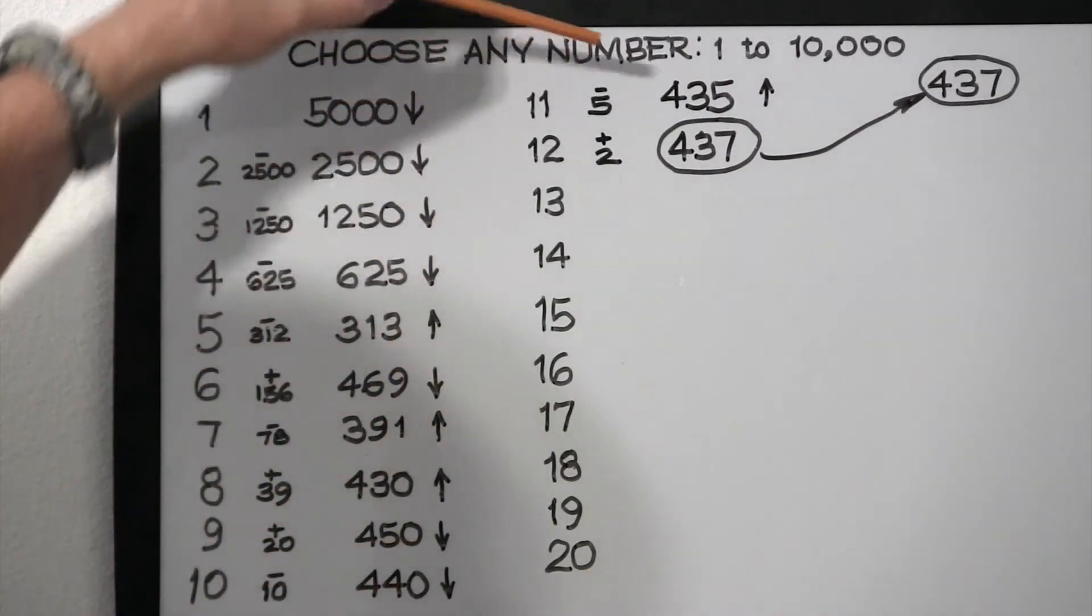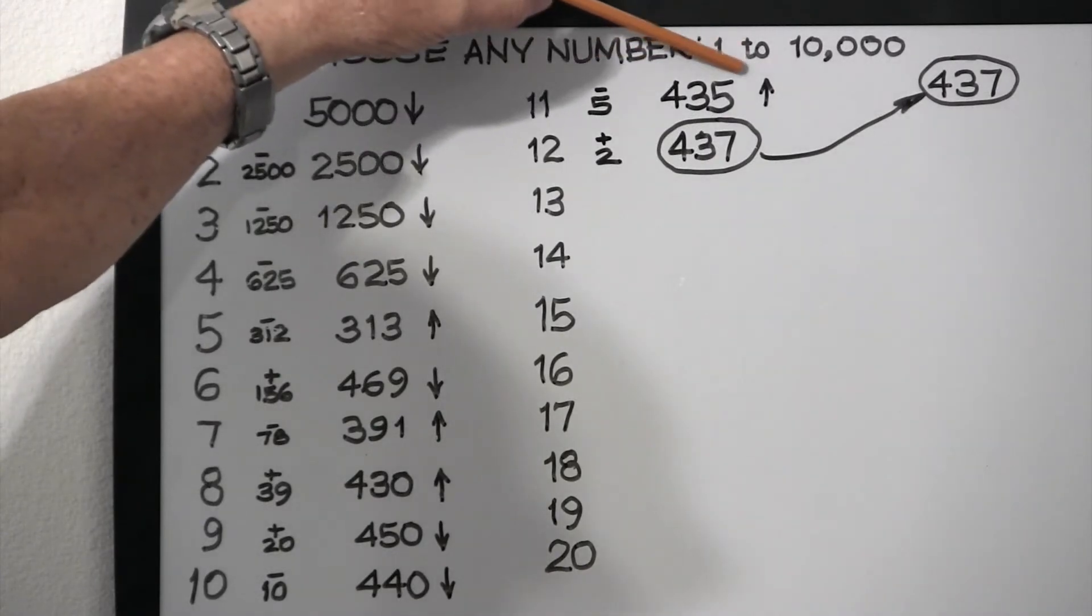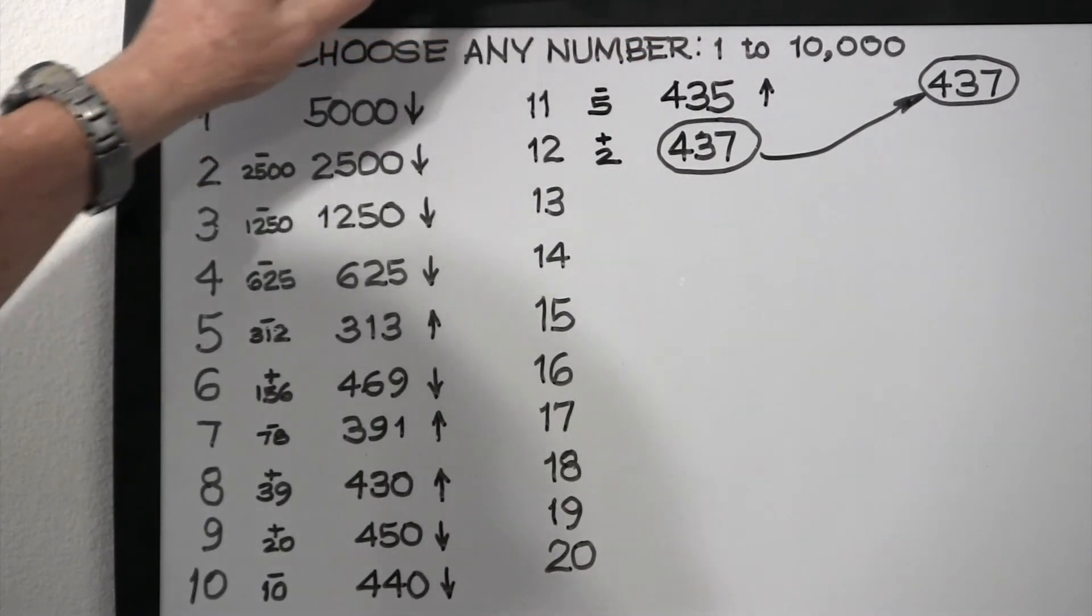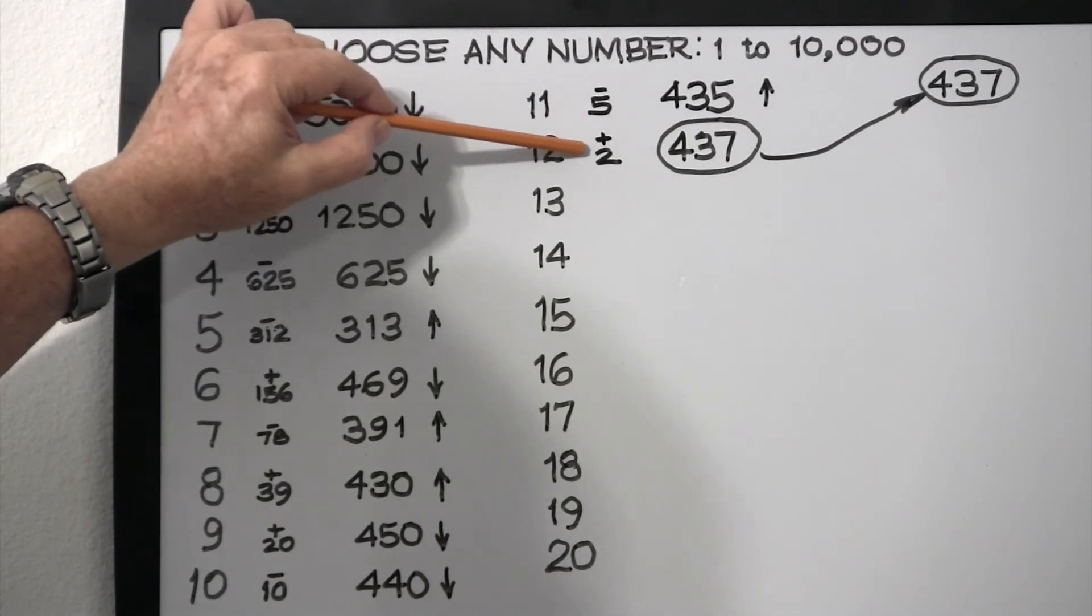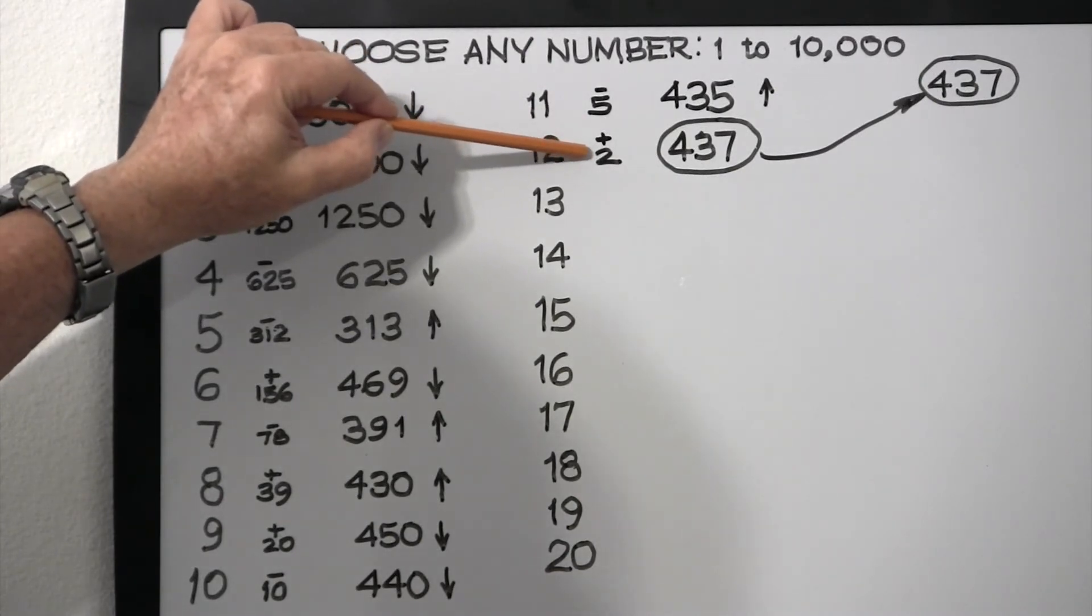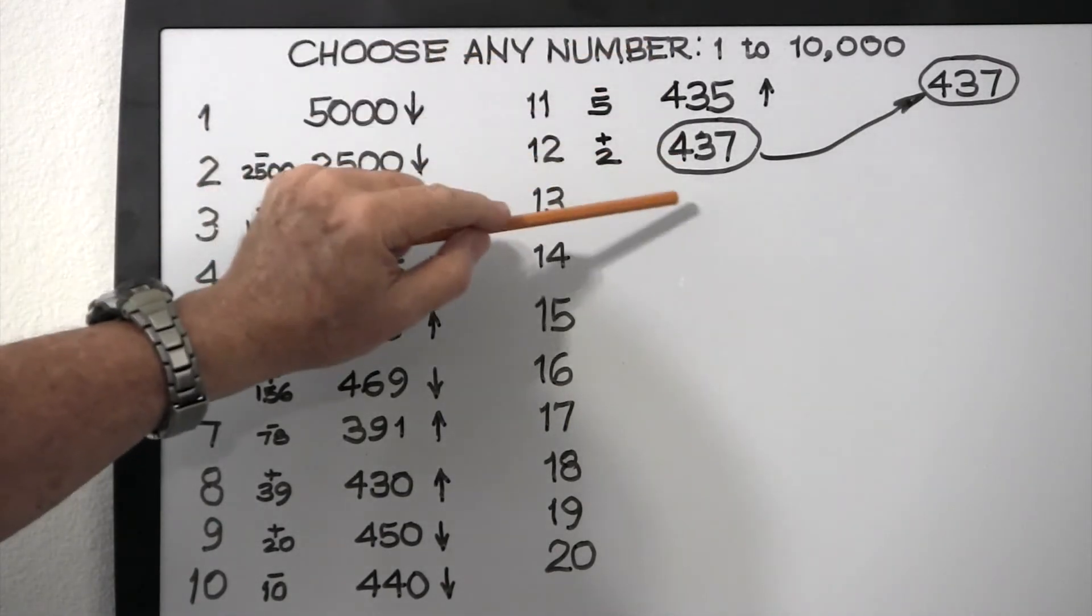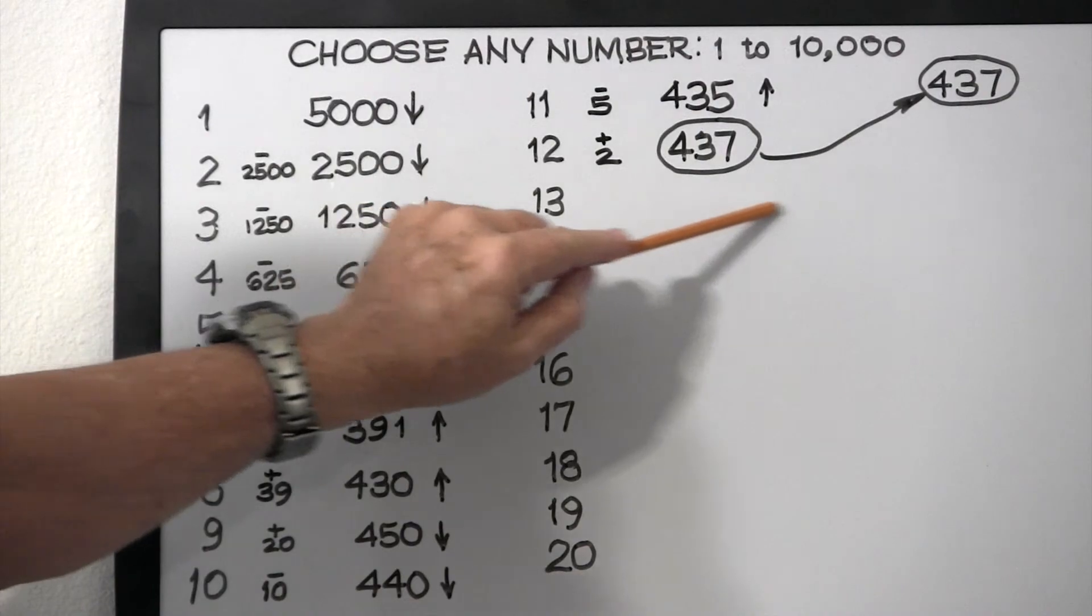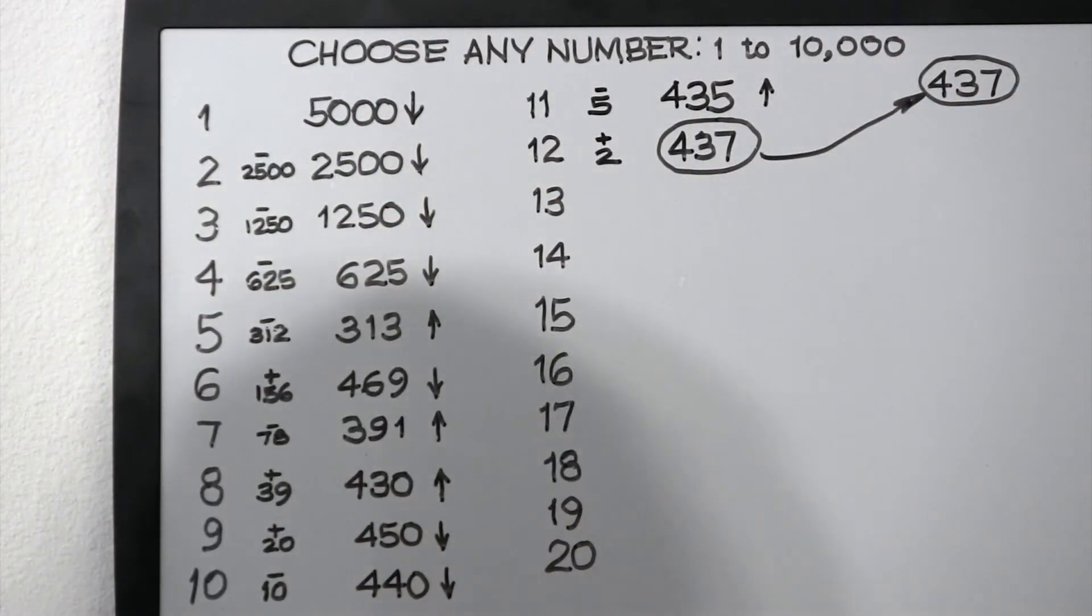So half of 10 is 5, so we subtract the 5 from the 440, and we have a guess of 435, at which time we're told to go up. So now half of 5 is 2 and a half, but we have this rounding thing, so we add 2. 2 to the 435 gives us 437, and voila, that happens to be the number we're looking for.